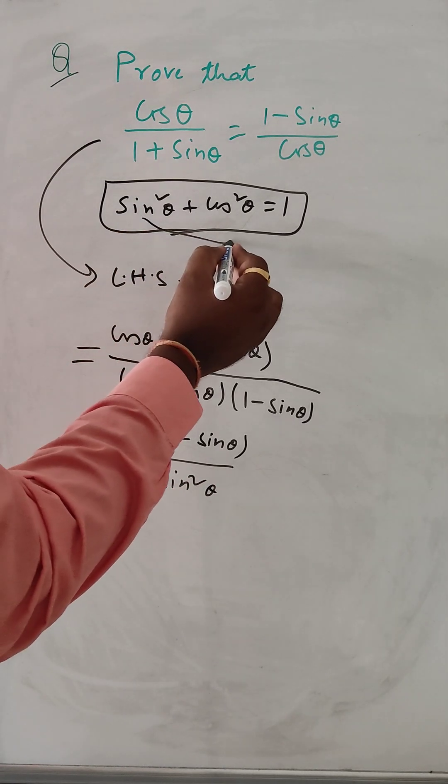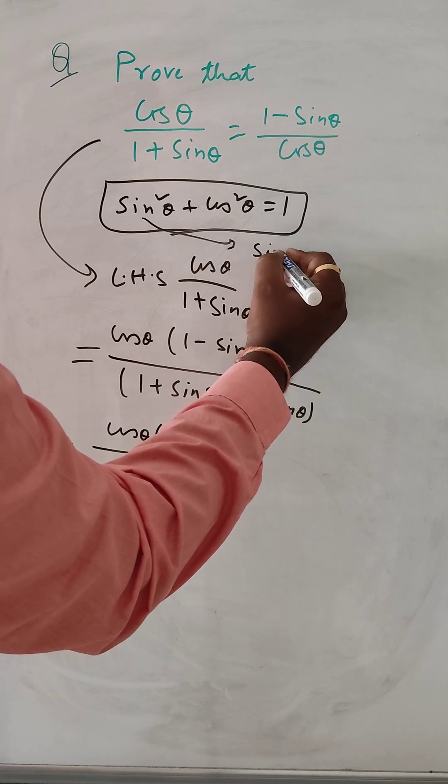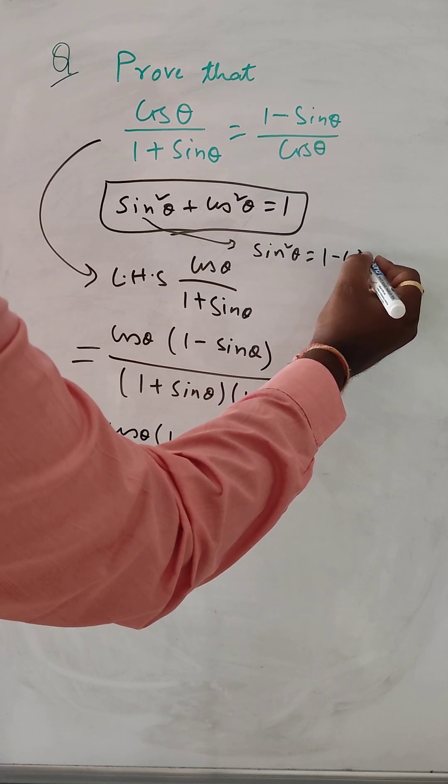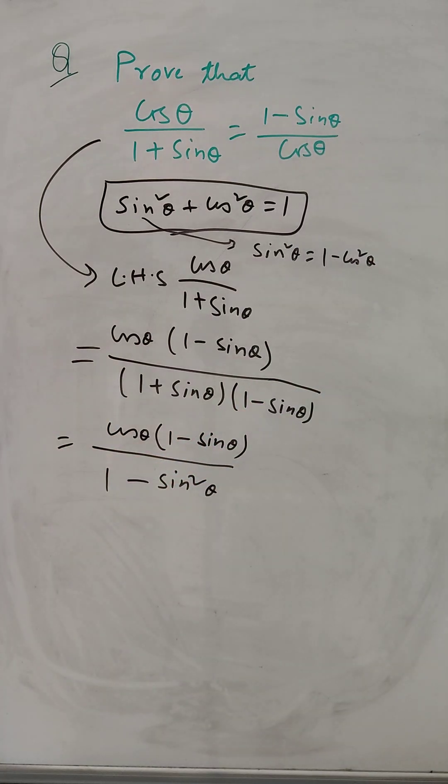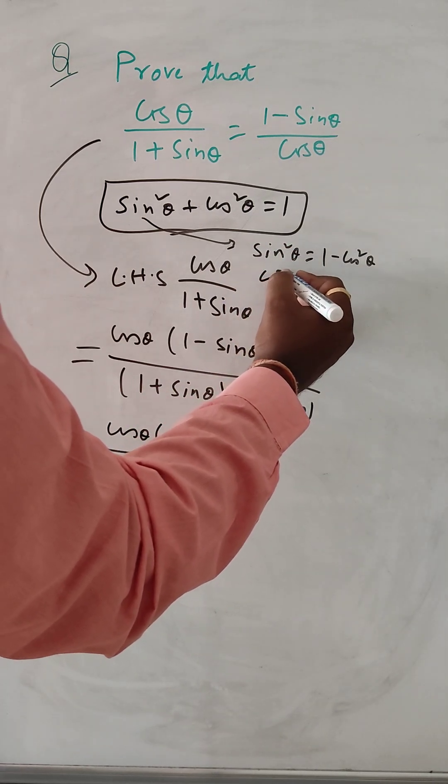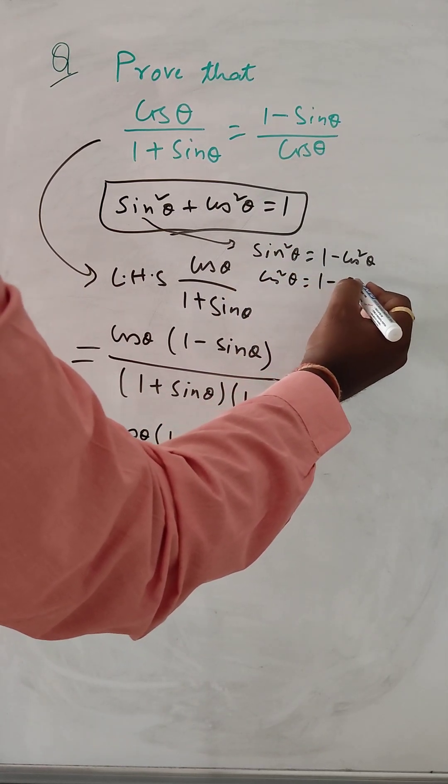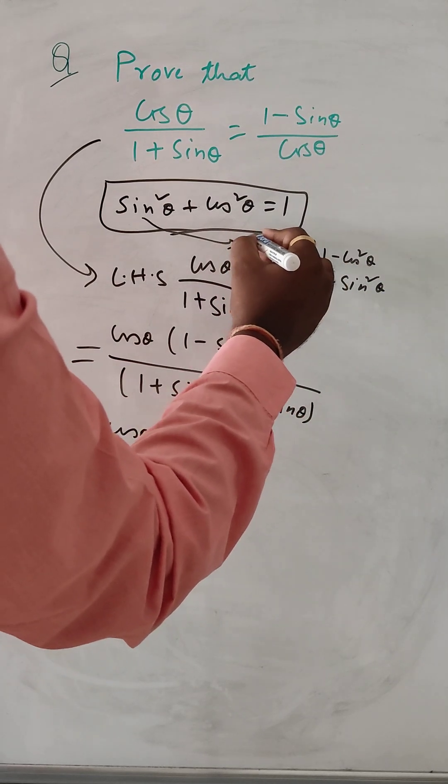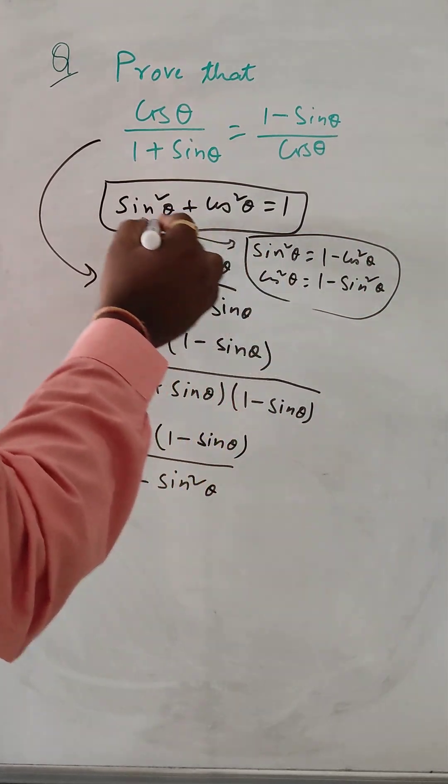So this formula sin square theta can be written as 1 minus cos square theta. And for the cos square theta we can write 1 minus sin square theta. We can take 2 things from this formula.